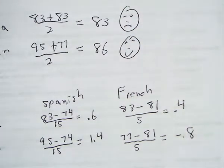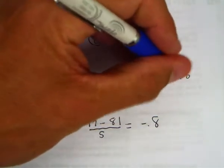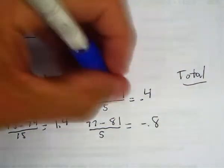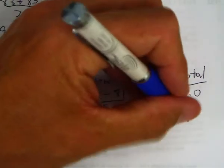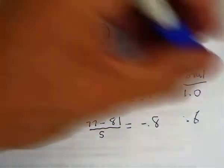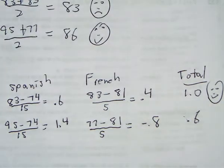Okay, so then we're going to get a total. We're going to add these, and in total, Anna was one standard deviation above the mean, and Megan was 0.6. So actually, Anna actually did better when you compare both exams.